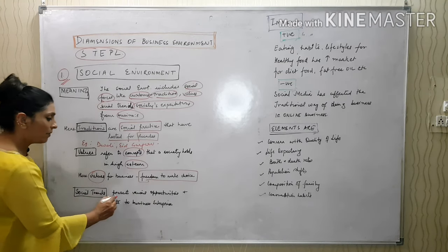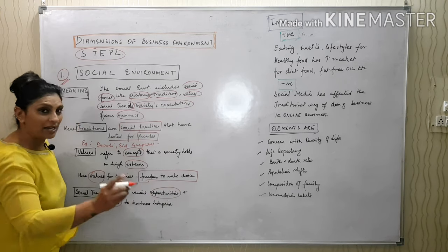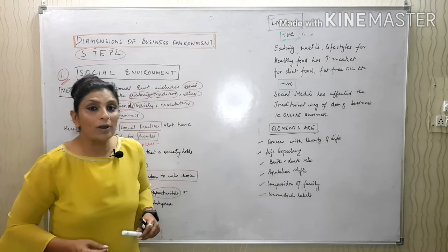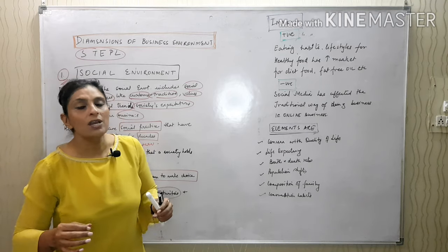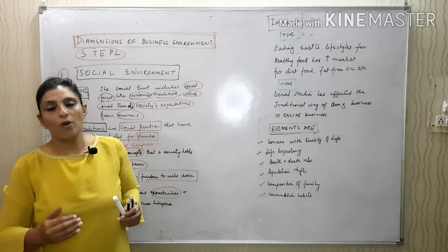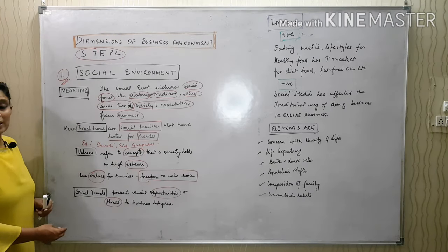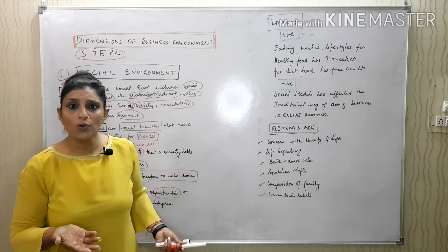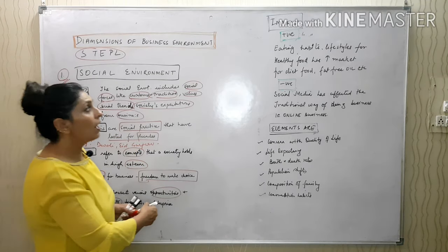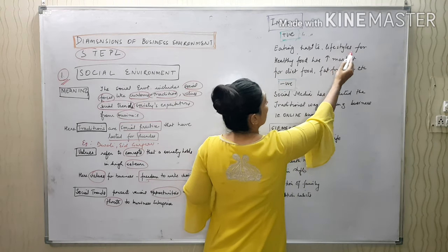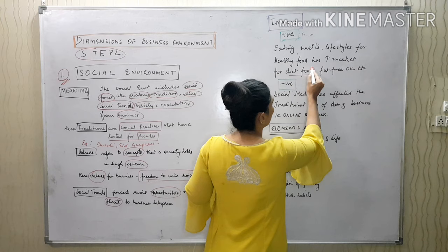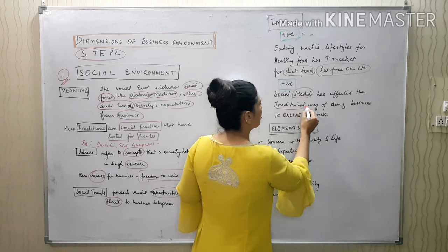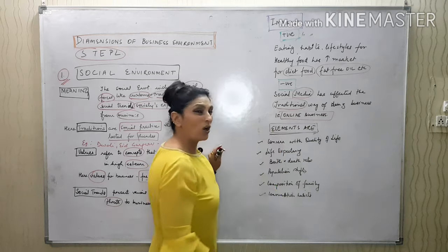Social trends present various opportunities and threats. Opportunities are those social trends which improve our performance, and threats are those negative social trends which hinder our performance. The example of a social trend: health food — because there is a requirement for health food in the market. The positive effect is that changing eating habits and lifestyles have increased the market for diet food and fat-free oil. The negative effect is that social media has affected the traditional way of doing business.